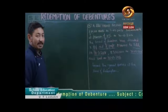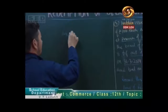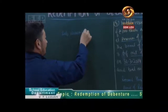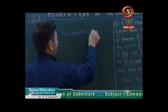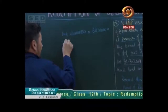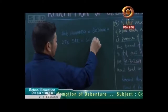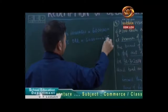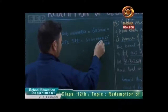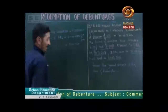We will create 25% DRR. So the total debenture amount is 60,000 multiplied by 100, that is 60 lakhs. 25% DRR — how much will it be? That is 60 lakhs multiplied by 25% = 15 lakhs. We will calculate that amount.